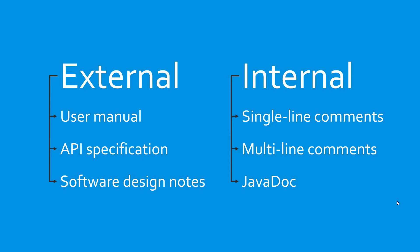There are basically two types. We have external and internal forms of documentation. The external ones include things like a user manual for the end user who wants to use your software. We have an API specification — that's to explain how individual parts of a program work so that other programmers inside your project can understand how everything fits together, what the parameters are for different methods or classes, and so on. And then we have software design notes, maybe things like a diagram that explains how everything fits together and how your piece fits into the larger picture.